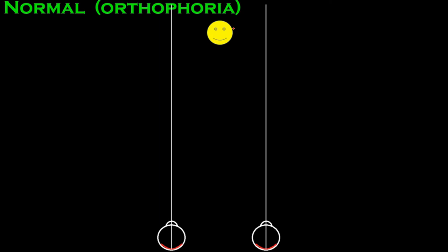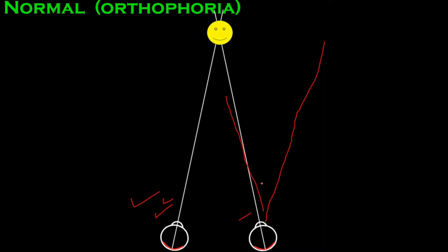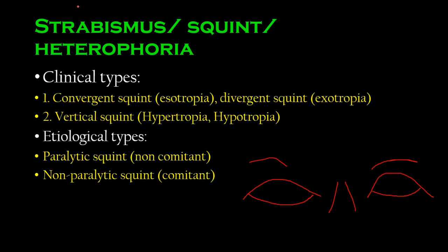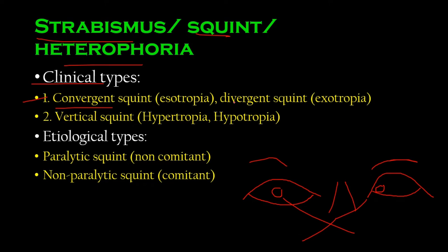In a squint, the vision lines are not parallel — one eye might be looking towards the outside or towards the inside. When the eyes move, the correct eye may focus on the subject but the squinted eye will not, because it was out of line from the beginning. The clinical types of strabismus include convergent squint, where one eye looks medially towards the nose, and their visual fields converge more than required.